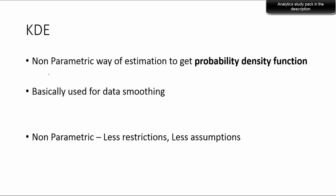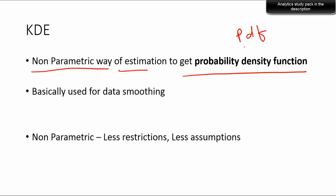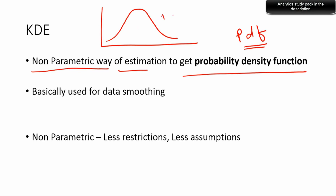Let's first understand the theory of KDE. This is a non-parametric way of estimating probability density functions, shortly known as PDF. In normal distribution, you get the PDF like the bell curve. Similarly for binomial, Weibull, Bernoulli — any distribution has a PDF. That's parametric because you always have a parameter in place, and the shape of the probability distribution function always looks the same.